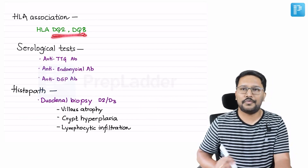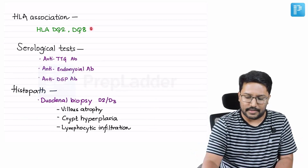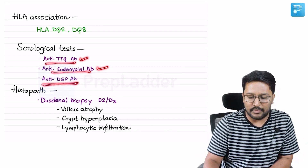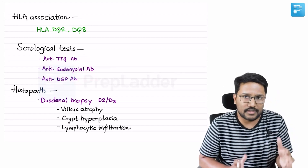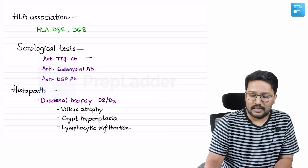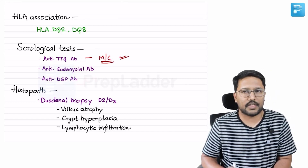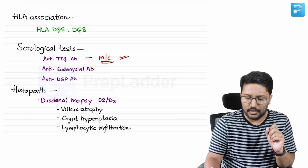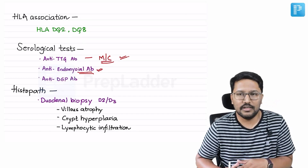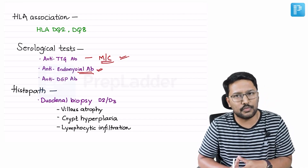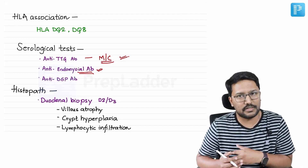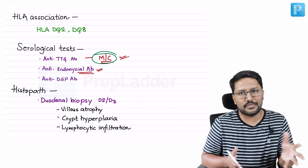HLA association: HLA-DQ2 is the most common, followed by HLA-DQ8. For serological tests, we do anti-TTG antibodies, anti-endomysial antibodies, and anti-deamidated gliadin peptide antibodies. The initial screening test most commonly performed is anti-TTG antibody. If that is positive, anti-endomysial antibody can be done for further confirmation. Anti-endomysial antibody is more specific than anti-TTG, though sensitivity is similar. Anti-TTG is preferred due to laboratory feasibility and is the most commonly performed test.